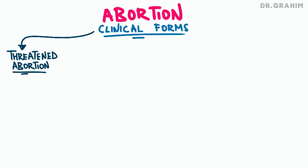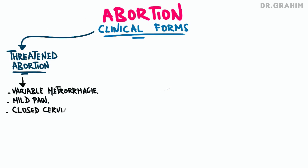The first form is a threatening abortion, a situation where the abortion is not yet imminent, but early signs suggest a threat of miscarriage. Patients may present with variable metrorrhagia, which can be mild or moderate. Pelvic pain is usually mild or sometimes absent, allowing some patients to continue their normal activities. During clinical examination, the cervix is closed, indicating no dilation yet, and the vagina is empty, meaning no conception product has been expelled. Pelvic ultrasound confirms the viability of the ovum, meaning the presence of an embryo with a heartbeat, but there may be a detachment of the ovum where the placenta begins to detach from the uterine wall. The pregnancy may still be viable with appropriate treatment.